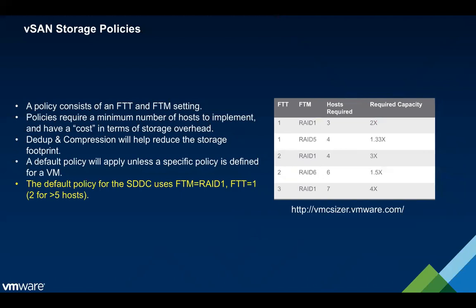If you're familiar with vSAN, you'll know that you can create a number of storage policies that all have different FTTs and FDMs. There will be a default storage policy, and if you don't specify a storage policy when you create a VM, it's going to use the default. With these SDDCs, by default, we use a storage policy with a RAID 1 FTM and an FTT of 1. That means you effectively take your 30 terabytes and cut it in half, because RAID 1 mirrors all the data. We have dedup and compression enabled, which helps reduce the overall storage footprint, but the vSAN storage policy has the most impact.